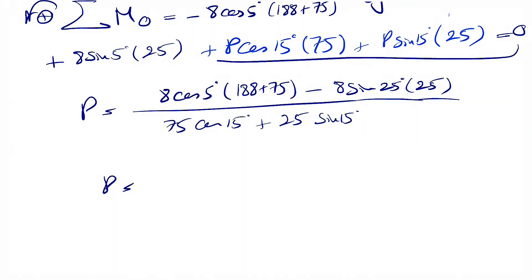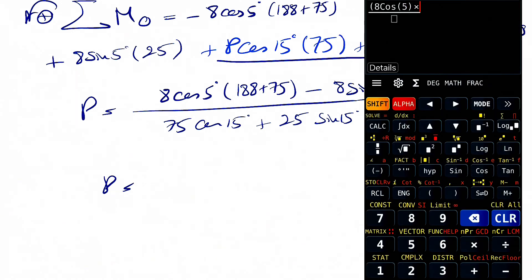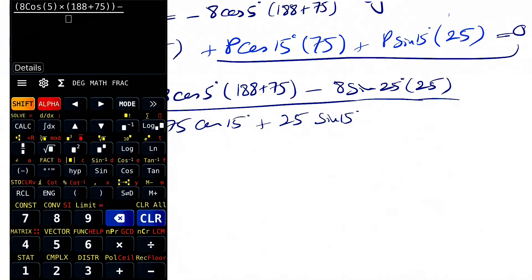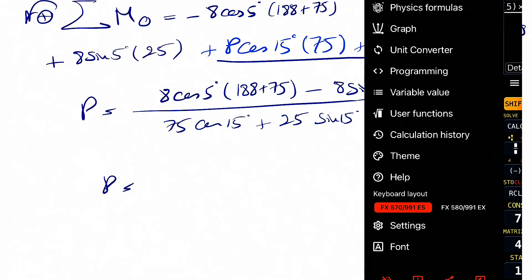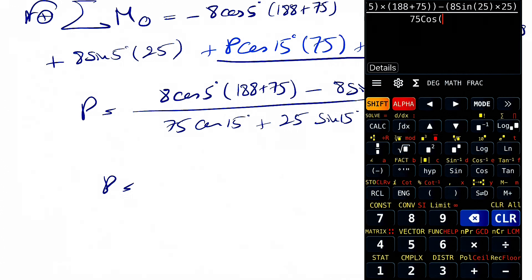I'll be done with this question. So 8 cosine of 5 times 188 plus 75 minus 8 sine of 25 times 25. And in the denominator, we're going to have 75 cosine of 15 plus 25 sine of 15.